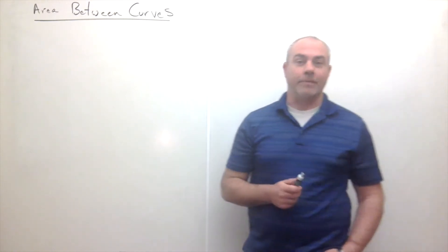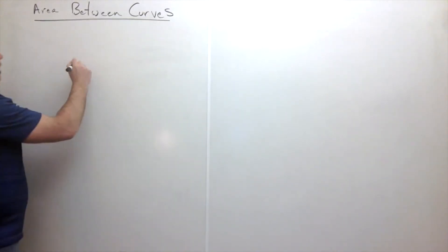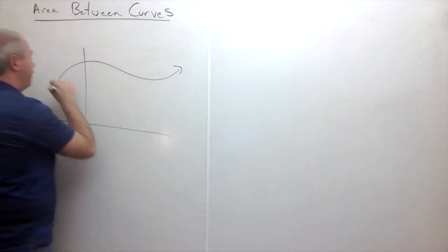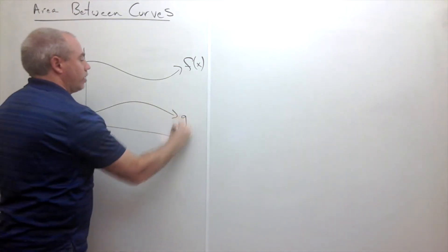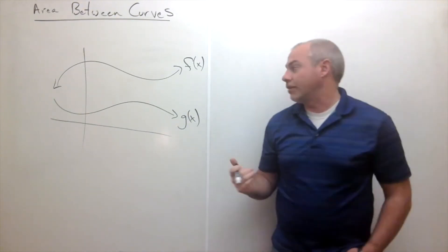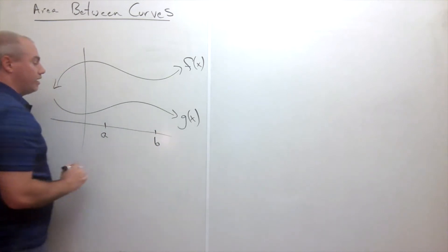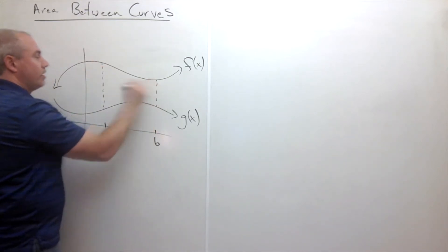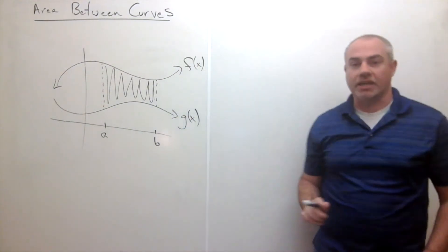Welcome. Today I'd like to talk about the area between two curves. Let's start by drawing a graph with two functions: f of x and g of x. In Calculus 1, we learn how to find the area under a curve between a point a and b using the definite integral. But what if we wanted to find the area trapped between these two curves between the x values a and b?